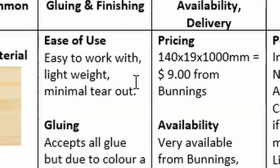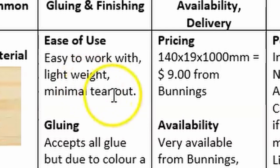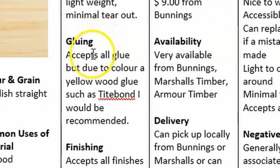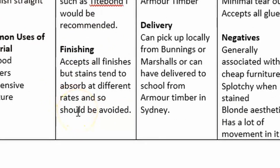Ease of use talks about how easy a product is to work with. For example, Tasmanian oak might be suitable for your project but its ease of use is challenging — it tears out a lot with planing, cutting, and even sanding can lift the grain. For gluing, if you're using a lighter timber use Titebond 1; for a darker timber use Titebond Dark or Titebond 3 as they dry a darker colour. For finishings, note what looks good — pine accepts all finishes but stains absorb at different rates causing splotchiness, so staining pine should be avoided.